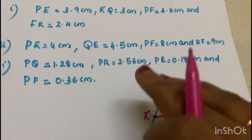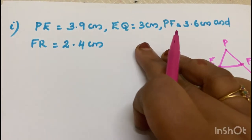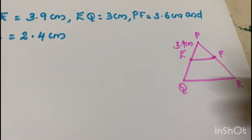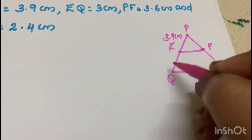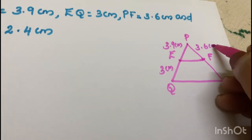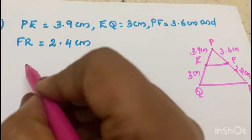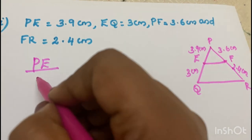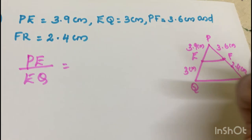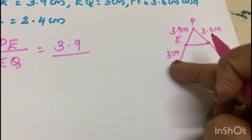Now we apply the theorem. In case one, PE is equal to 3.9 cm. We select the same ratio. PE by EQ equals 3.9 divided by 3.